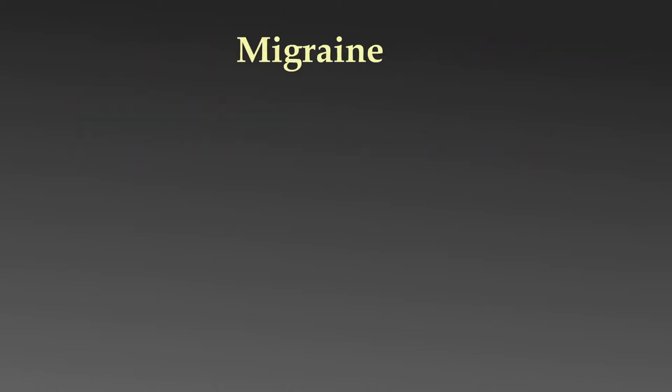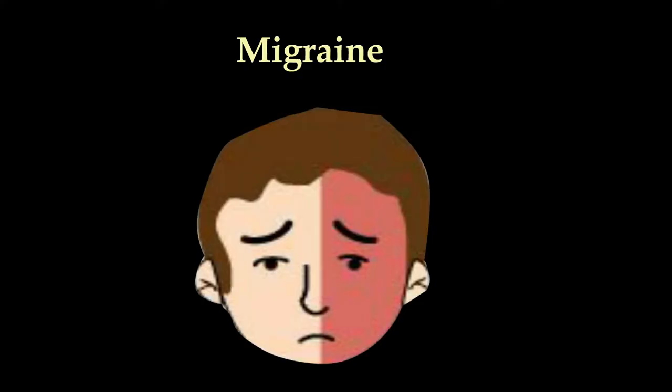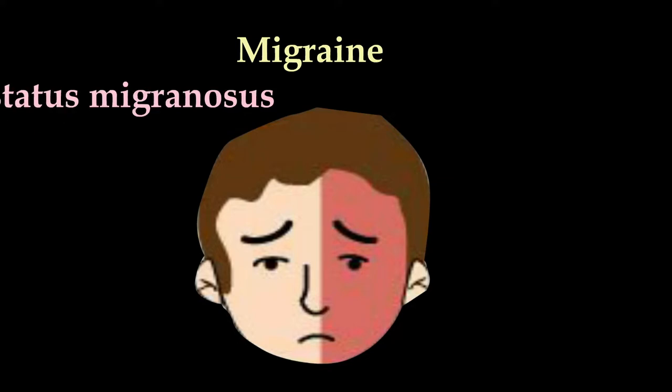Migraine is a severe form of throbbing headache that typically occurs in one half of the head and can progress to involve the whole head. It can last for 4 hours to 72 hours. If it lasts longer than 72 hours, it is called status migrainosus.